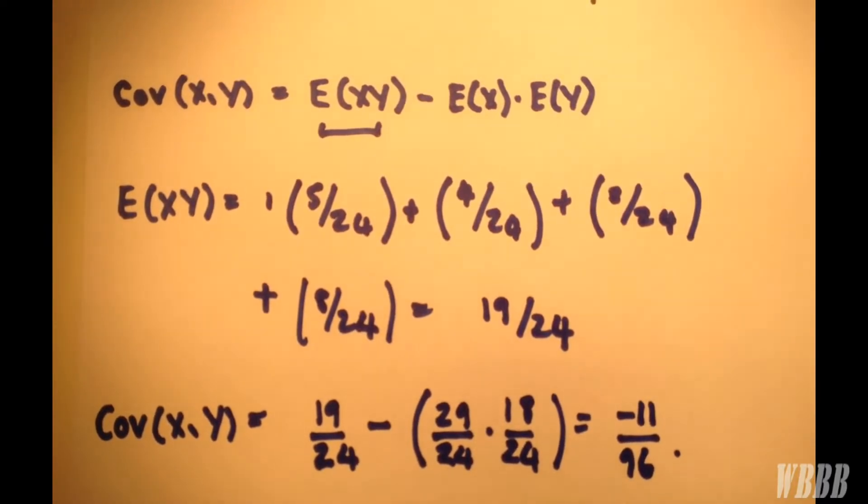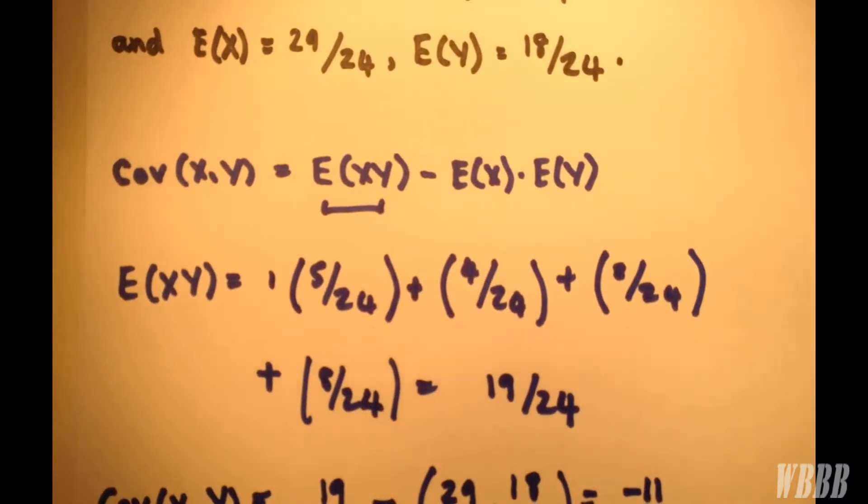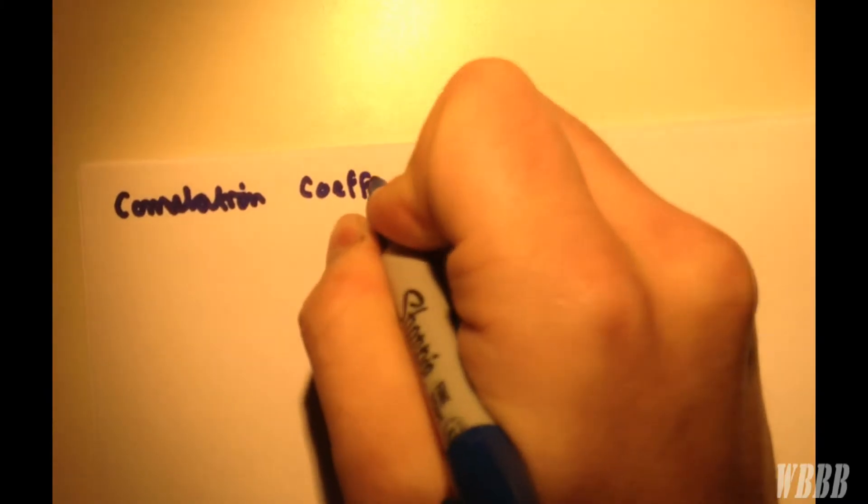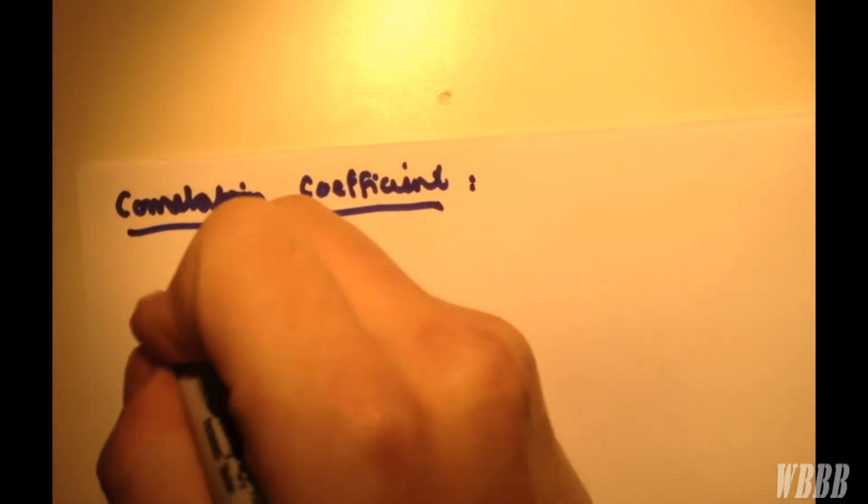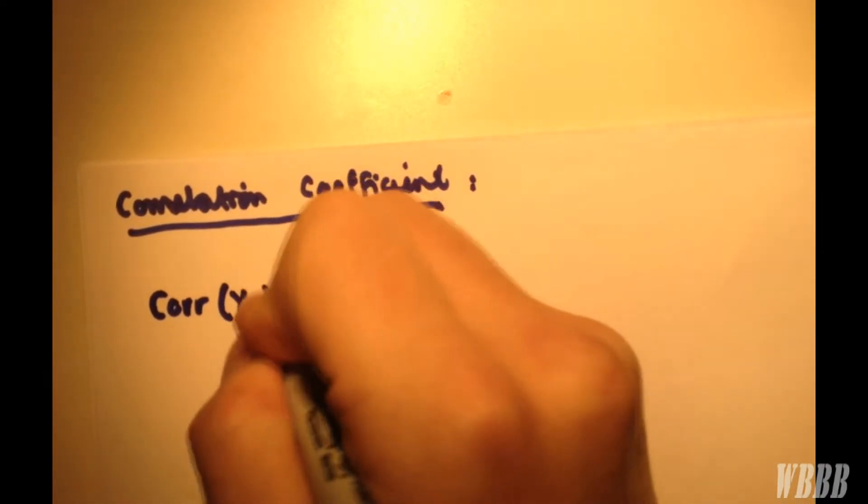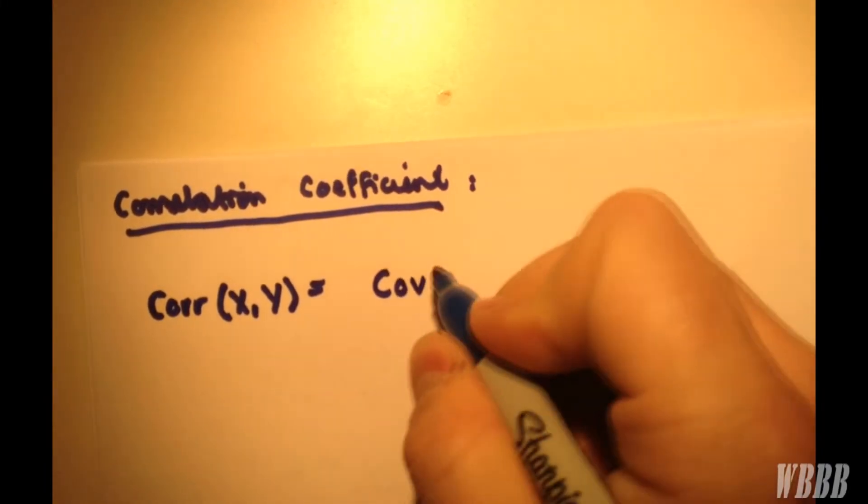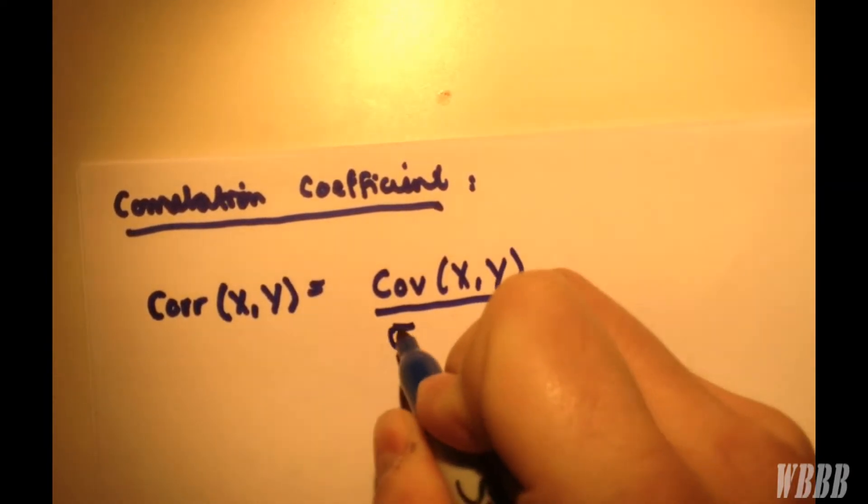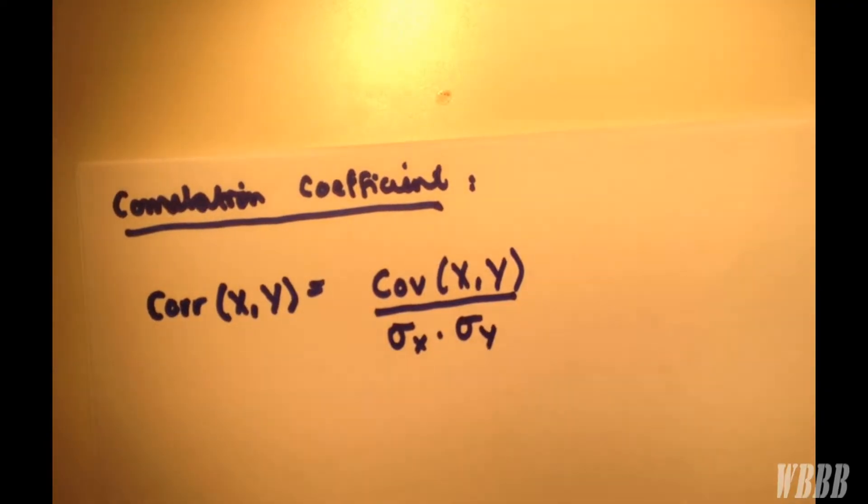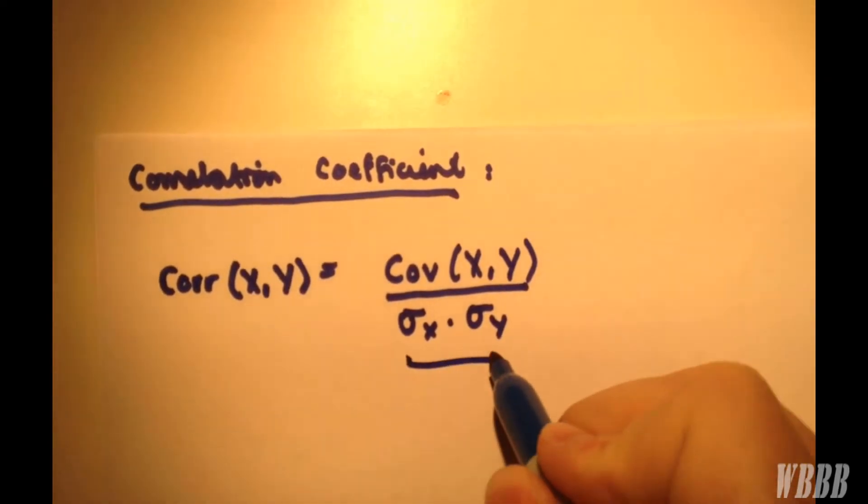So now we've worked out our covariance. How do we work out our correlation coefficient? Well, that's a little bit trickier, but it follows on from what we just worked out. The formula for a correlation coefficient is as follows. The correlation between X and Y is equal to the covariance of X and Y, divided by the standard deviation of X, multiplied by the standard deviation of Y. So we've got this, but we don't have either of these values.